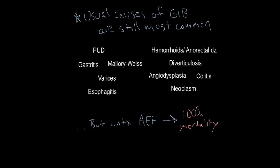So anyone with aortic pathology, whether it be a AAA or history of aortic surgery, presents with any type of GI bleed, whether it be upper, lower, minuscule or massive, you have to at least consider aortoenteric fistula.